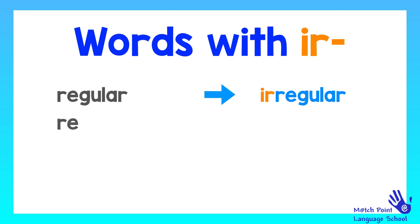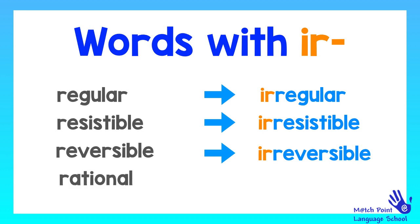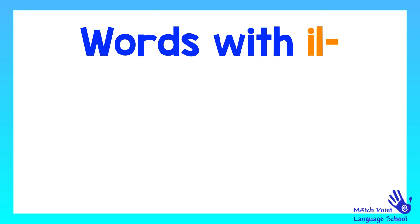Next word is resistible. If we add the prefix, it becomes irresistible. Another word is rational, which becomes irrational. Quite simple, right? Let's continue. We still got some more.